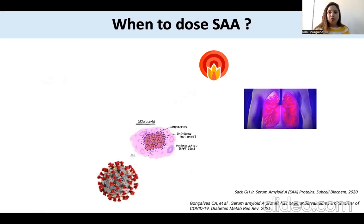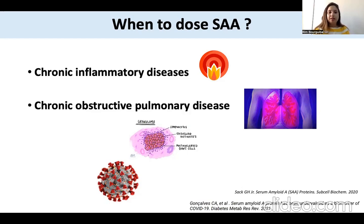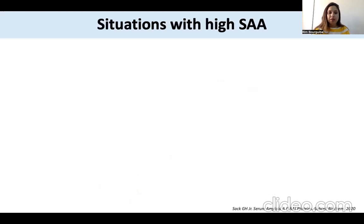When should we do SAA? In fact, it is recommended to do SAA in chronic inflammatory diseases, in chronic obstructive pulmonary diseases, in sarcoidosis, and in COVID-19. Recently, several studies showed that the SAA rate is correlated with the severity of disease, especially in COVID-19.